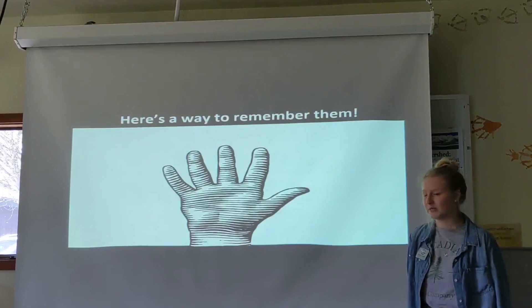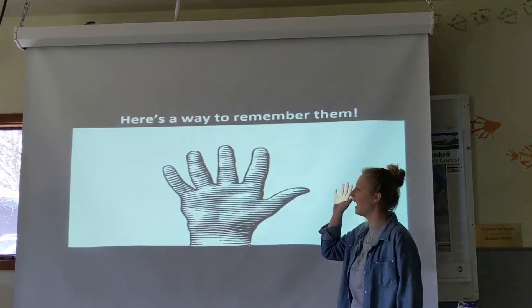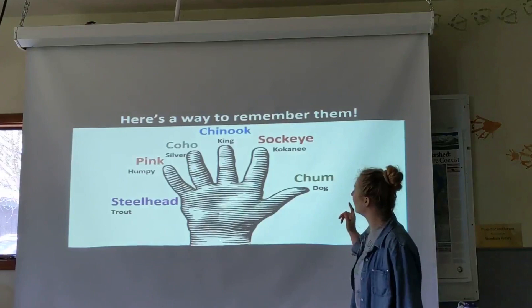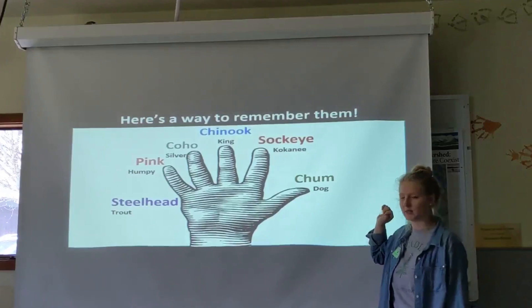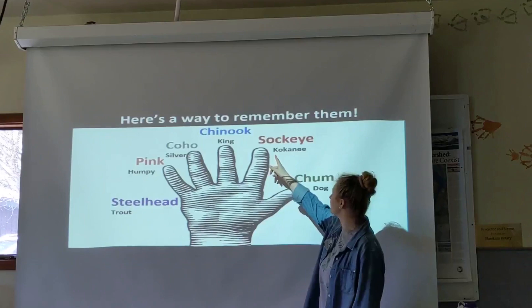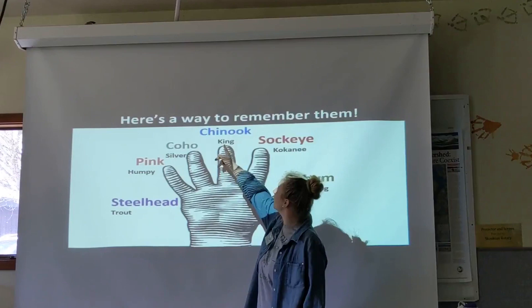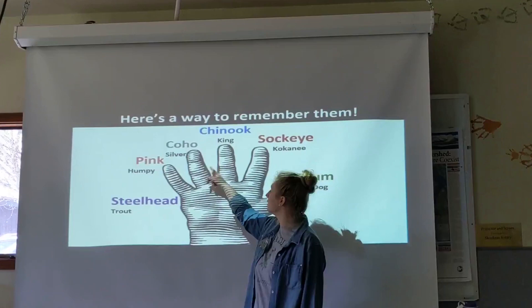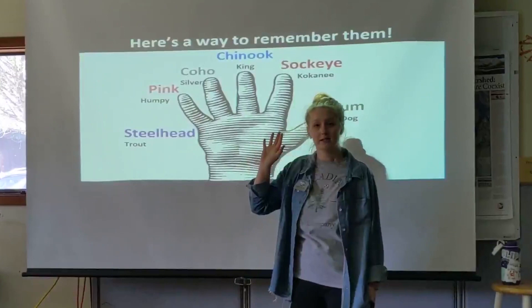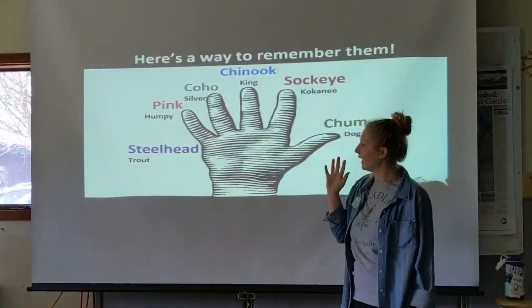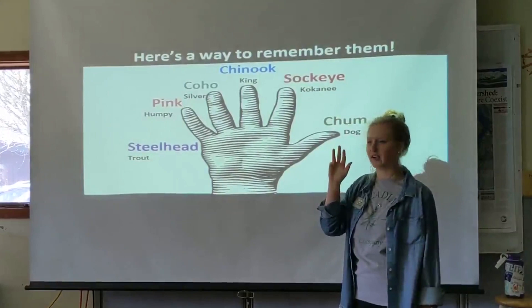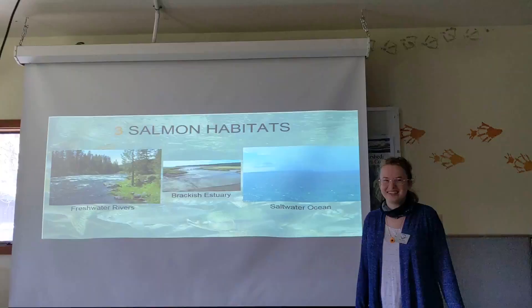Here is a way to remember all the salmon species. Hold up your hand like you're going to give somebody a big high five. Chum rhymes with thumb, so chum is the thumb. Sockeye goes with the pointer finger because you don't want to sock your eye out. The middle finger — also the largest — correlates with the largest salmon, the king salmon. Coho or silver salmon goes with the ring finger because you may wear a silver ring. Pink or humpy salmon goes on the pinky finger. And the steelhead trout brings them all together.